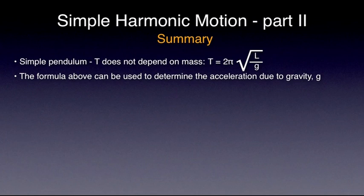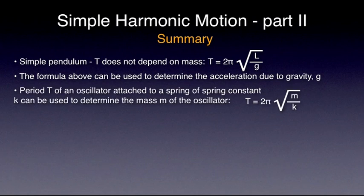Such a pendulum can be used to work out the value of the acceleration due to gravity, G. If the length of the pendulum, L, and its period, capital T, are measured experimentally, G can be calculated from the formula shown above. By measuring the period capital T of an oscillator consisting of a spring of known spring constant K and mass M, one can determine the mass of the oscillator using the formula T equals 2π square root of M over K.